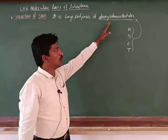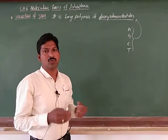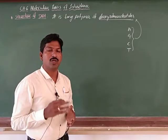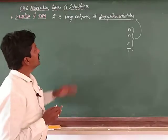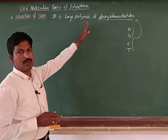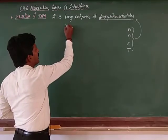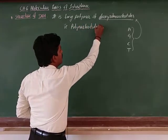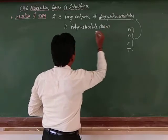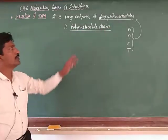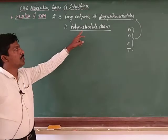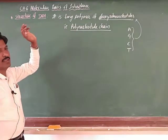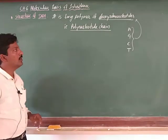These 4 types of deoxyribonucleotides are joined, linked, and bonded by phosphodiester bonds, making a long chain called a polymer. That is what we call a polynucleotide chain. This polynucleotide chain forms DNA — deoxyribonucleic acid.